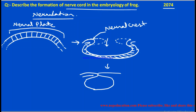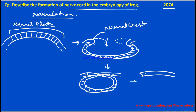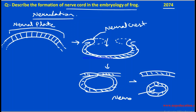The neural plate separates itself from the parent ectoderm in the form of the neural tube. When the neural folds come into contact and fuse together, the neural tube is formed separately from the ectoderm. The neural tube has a cavity called the neurocoel.